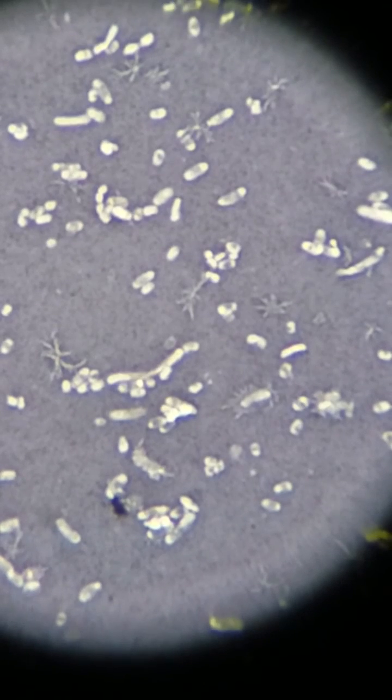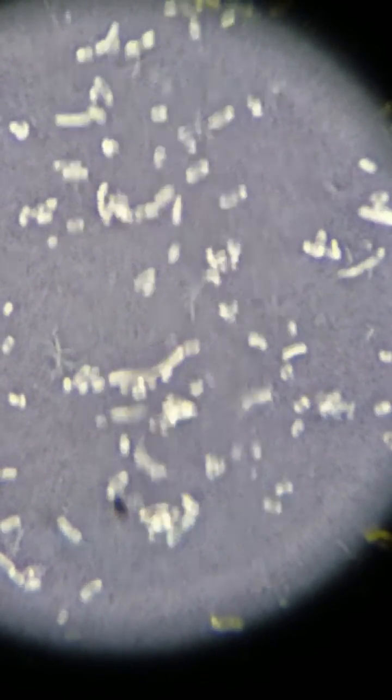It could be volutin, it could be DNA, it could be a bunch of different things you don't know because it's still too small, but what this does show you is the application of a negative stain. Okay? Thank you.